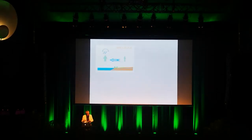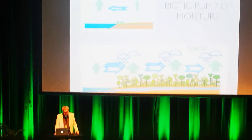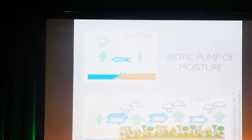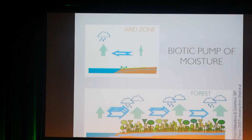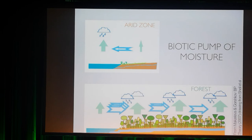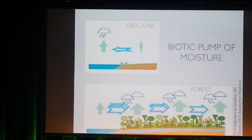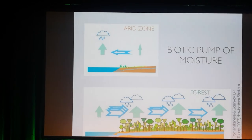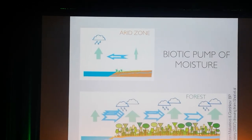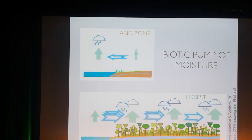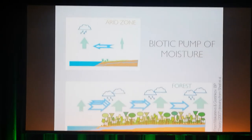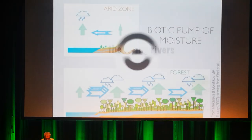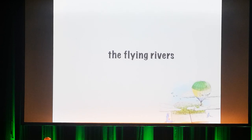What we found studying the Amazon is that when you have forest on land, it inverts the flow. Condensation on land lowers pressure and pulls water inland. This is called the biotic pump of moisture. It explains rainfall 3,000 kilometers from the coast in many forests around the world.